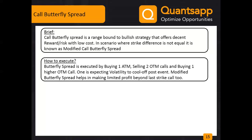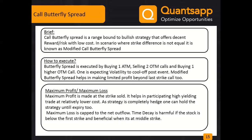Butterfly spreads offer a relatively higher reward-to-risk ratio — sometimes 3:1 or 2:1 depending on volatility. You know your maximum loss and maximum profit upfront. This makes it ideal from beginner to intermediate level, since you avoid naked option writing with unlimited loss. Maximum profit is made at the strike where you sold two options; maximum loss is the net outflow.